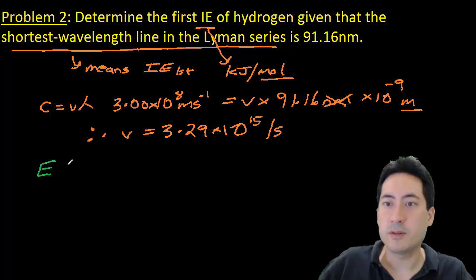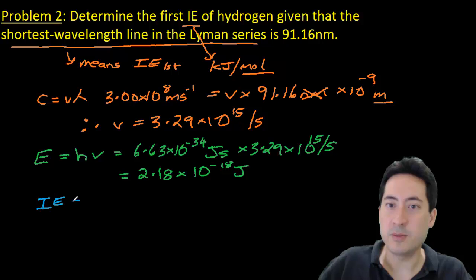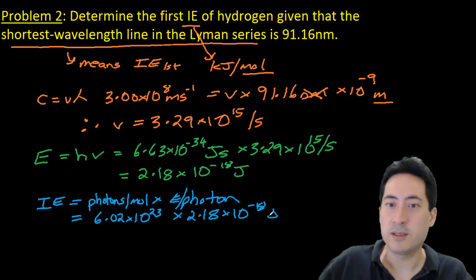And so again, I just sub that in, and I get the energy as 2.18 by 10 to the minus 18 joules. So that's the energy of a photon times that by Avogadro's number, which is in your data booklet. And so that gives us the energy from a whole mole. And so that ends up being 1,312 kilojoules per mole.